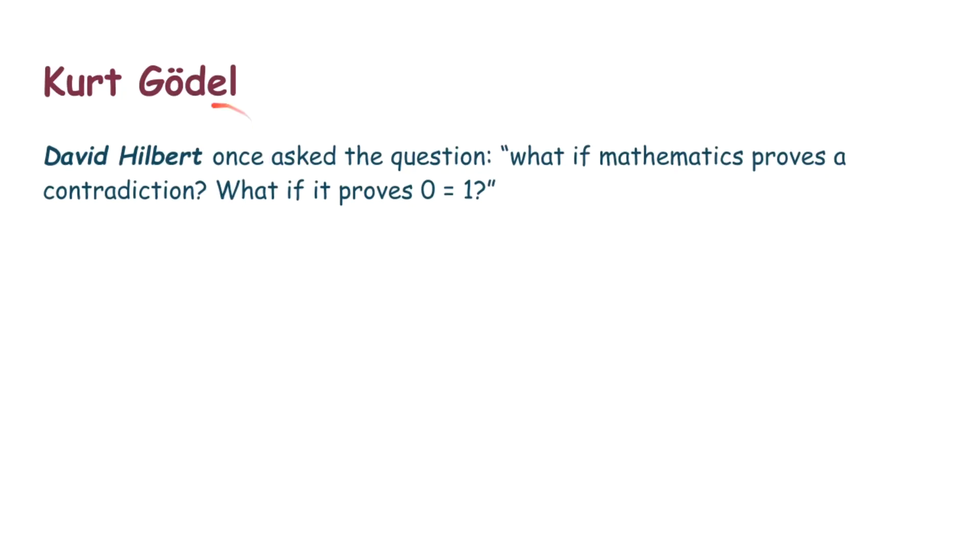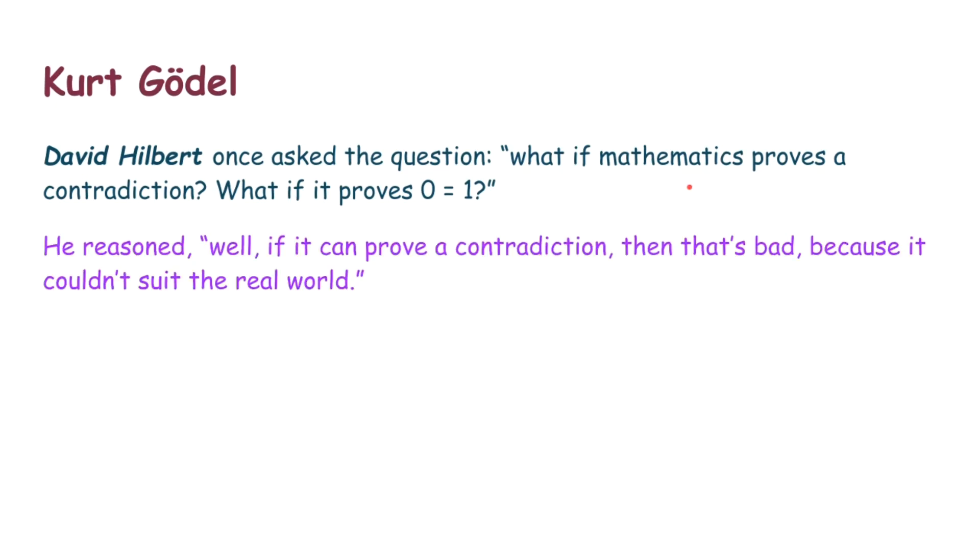So Kurt Gödel, that's who we're going to talk about now. But first, we're going to talk a little bit about David Hilbert. So one time he asked the question, what if mathematics proves a contradiction? What if it proves that zero equals one? Eventually that could happen. We don't know if it's true, but it could happen. And if it does, we'd be in trouble. That'd be bad.